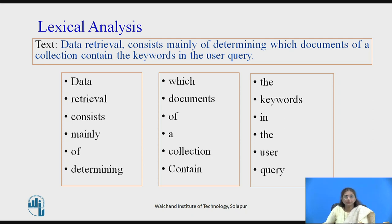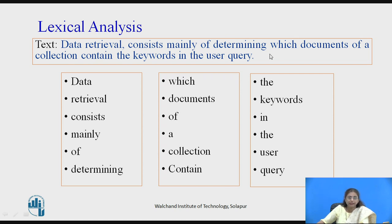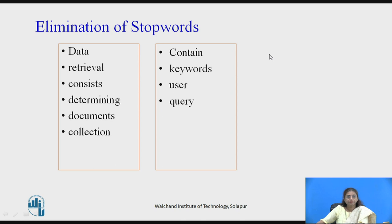This is the example text we have seen. After lexical analysis, these terms or words are generated by removing the separators — here separators are space and comma. Then we removed the stop words: words not carrying meaningful information, particularly articles, prepositions, adjectives, and connecting words. These are the words identified after elimination of the stop words.